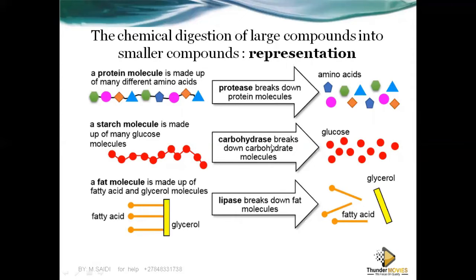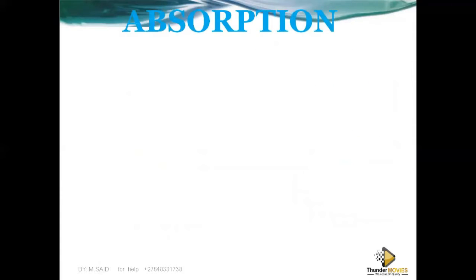Examples of carbohydrases include maltase and sucrase, and their end product is glucose. Fat molecules are made up of fatty acids and glycerol — the structure looks like the letter E. When lipases break down fat, you produce fatty acids and glycerol.